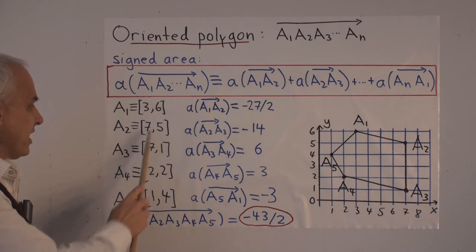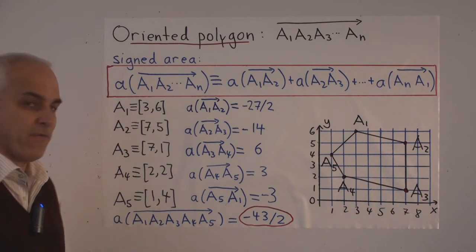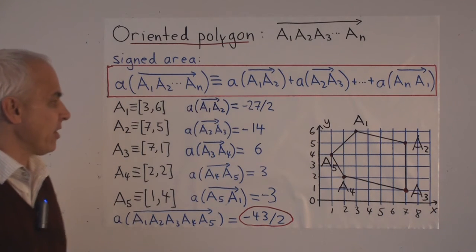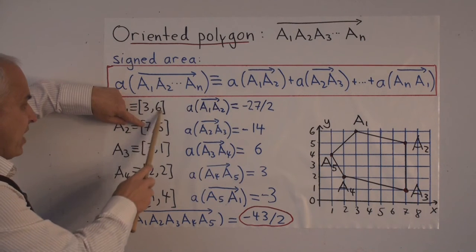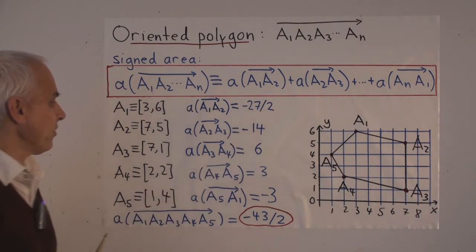Here are the coordinates of the six points. A1 is 3, 6. A2 is 7, 5. A3 is 7, 1. A4 is 2, 2. And A5 is 1, 4. Then the signed area of the side A1, A2. How do we compute it? It's 3 times 5 minus 7 times 6, all divided by 2. That's minus 27 over 2.